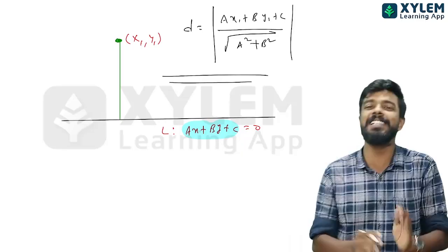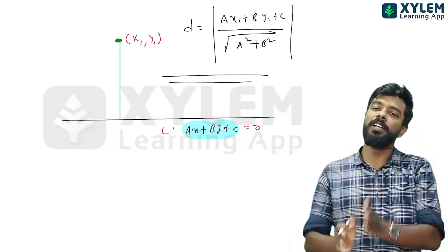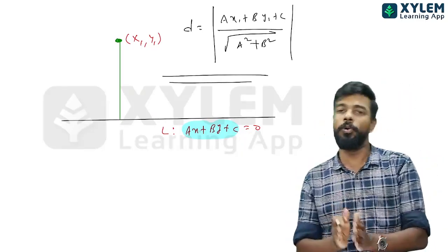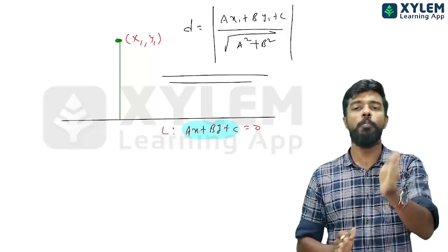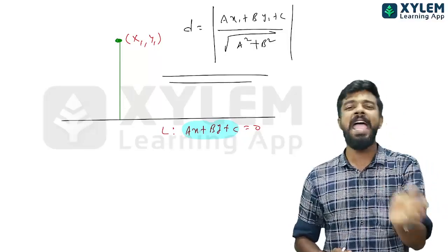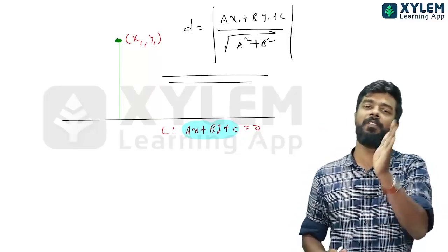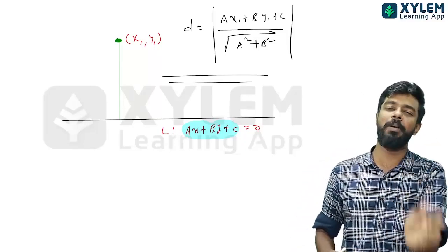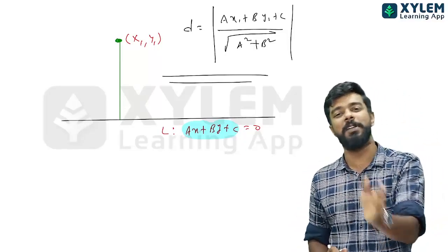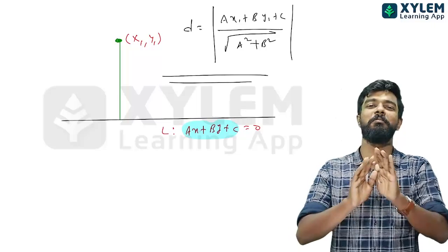So the distance formula is: d equals the modulus of a·x₁ plus b·y₁ plus c, divided by the square root of a² plus b².